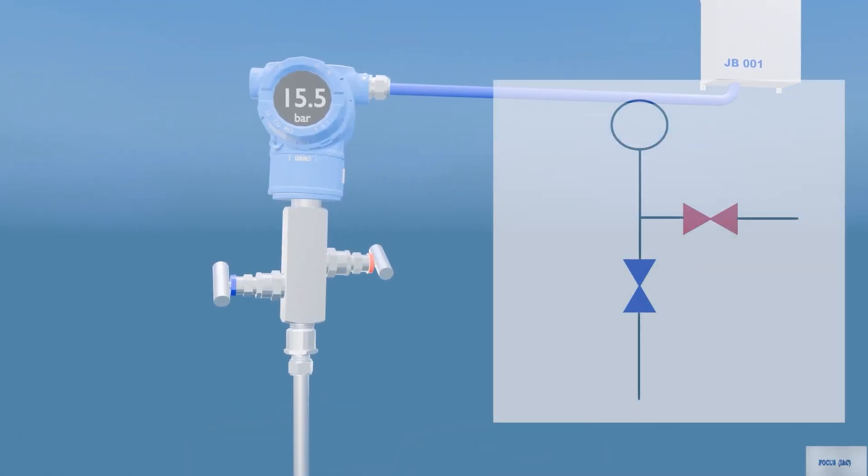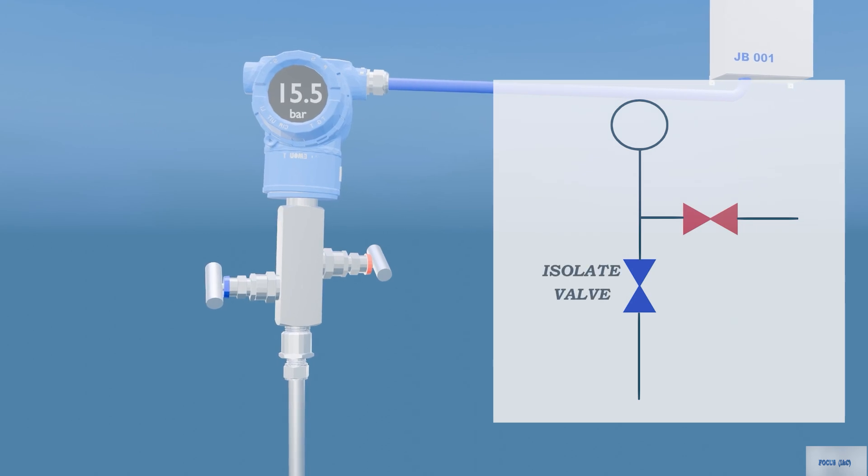A two-valve manifold consists of one isolate valve and one vent valve. The isolate valve is designated with a blue handle and the vent valve has a red handle.